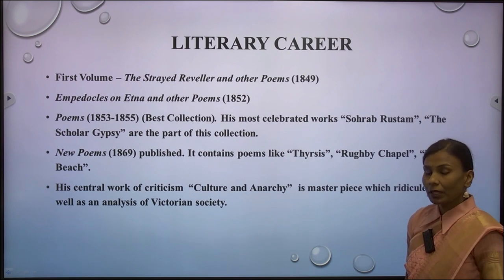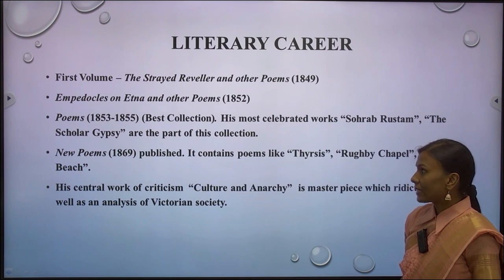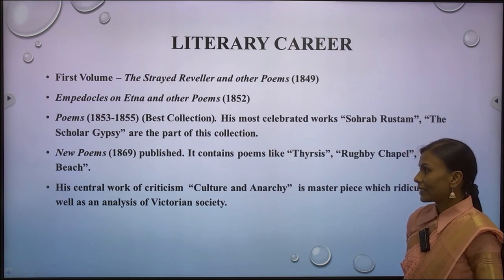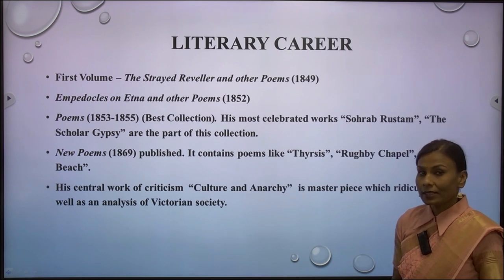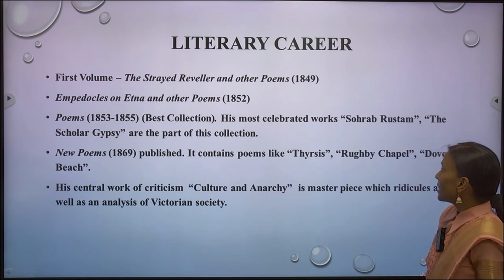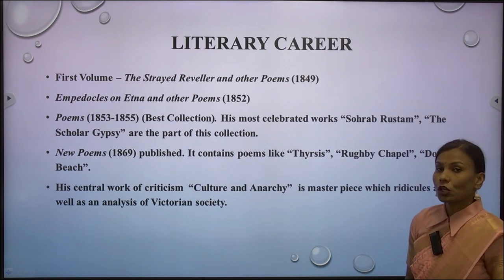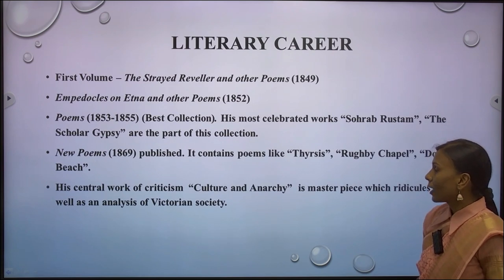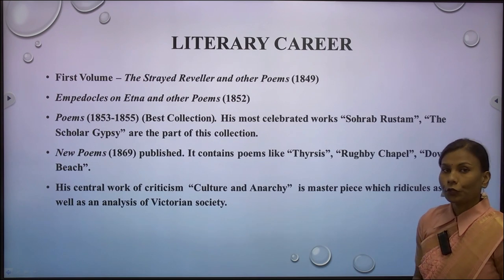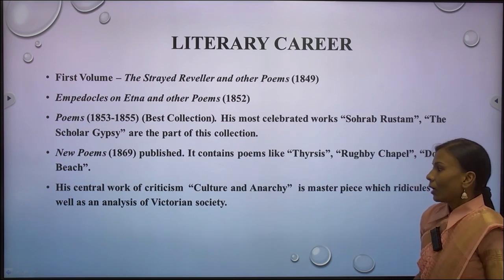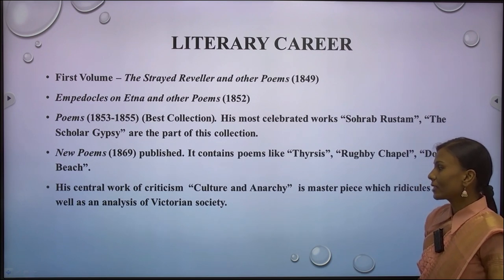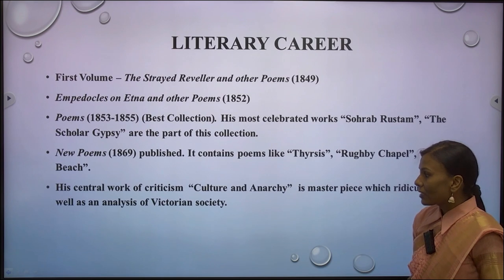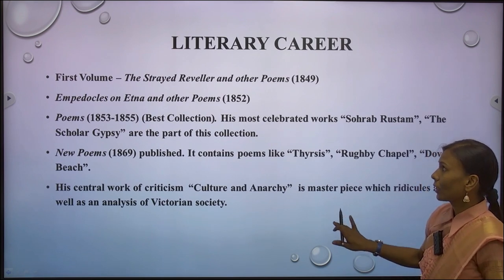Now come to the literary career of Matthew Arnold. His first volume of poetry was 'The Strayed Reveller and Other Poems,' which came in 1852. His next collection was 'Poems,' considered his best collection. His most celebrated works 'Sohrab and Rustum' and 'The Scholar Gipsy' are part of this collection. His 'New Poems' of 1869 contains 'Thyrsis,' 'Rugby Chapel,' and 'Dover Beach.' His central work of criticism was 'Culture and Anarchy,' a masterpiece analyzing Victorian society.